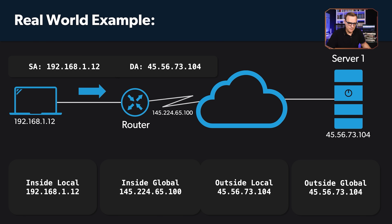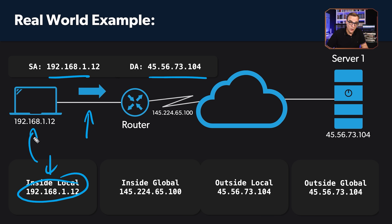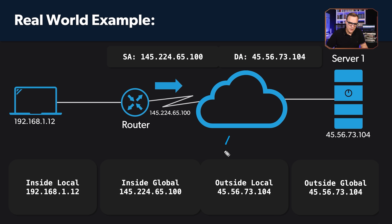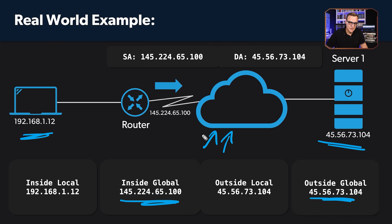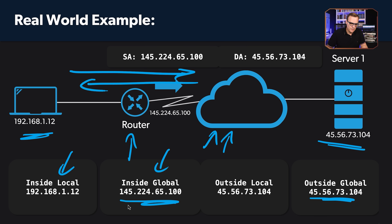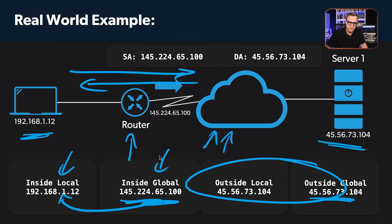When the return traffic gets to the router, the router changes the destination IP address from 145.224.65.100 back to 192.168.1.12 — the PC's actual local IP address. So the inside local address is the IP address of the inside host on the local area network. On the global internet, the inside host has its inside global address. This router simply changes the inside local address to the inside global address in one direction, and reverses it on the return traffic. The server's IP address remains the same throughout.